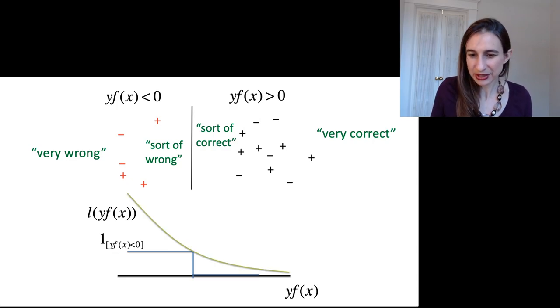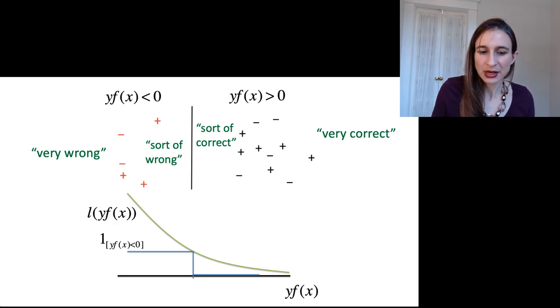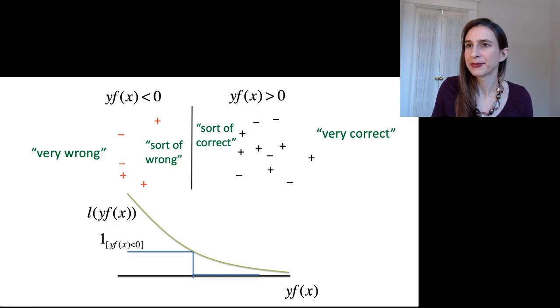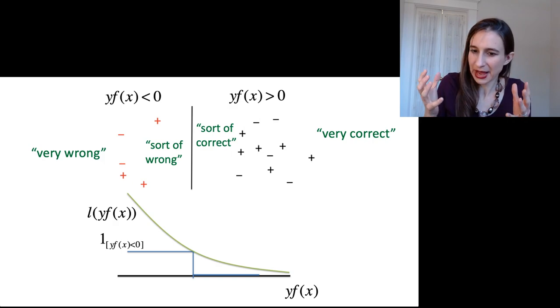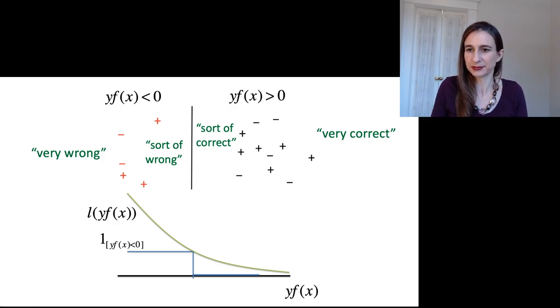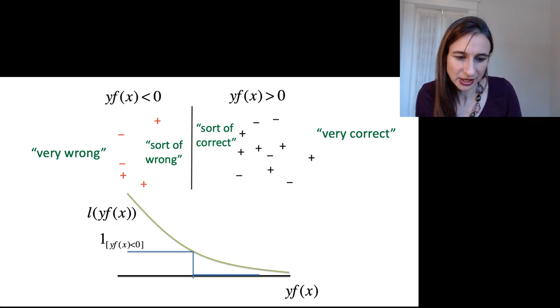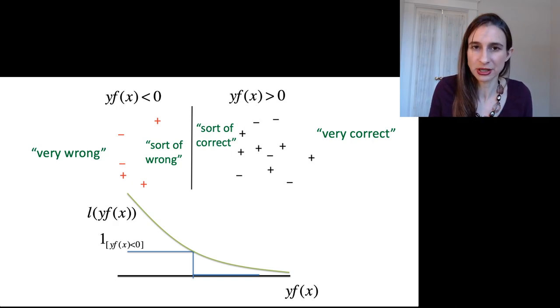So what we typically do in machine learning is we introduce these loss functions, and the loss functions penalize you depending on the margin. So if you're very wrong, if you made a prediction that had a very large positive value of x, and you had a negative y, that's considered a very, very bad negative margin. It's very large magnitude negative margin. And so here you were very, very wrong, in which case you suffer a very large loss here.